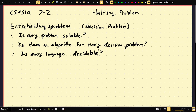Do there exist undecidable languages? Hilbert was part of a school of formalists who believed this to be one of the most important questions in mathematics — can everything be done, and if so, give a way to do everything. It turns out Alan Turing said no, you can't do everything. So it's false. There exist undecidable languages.